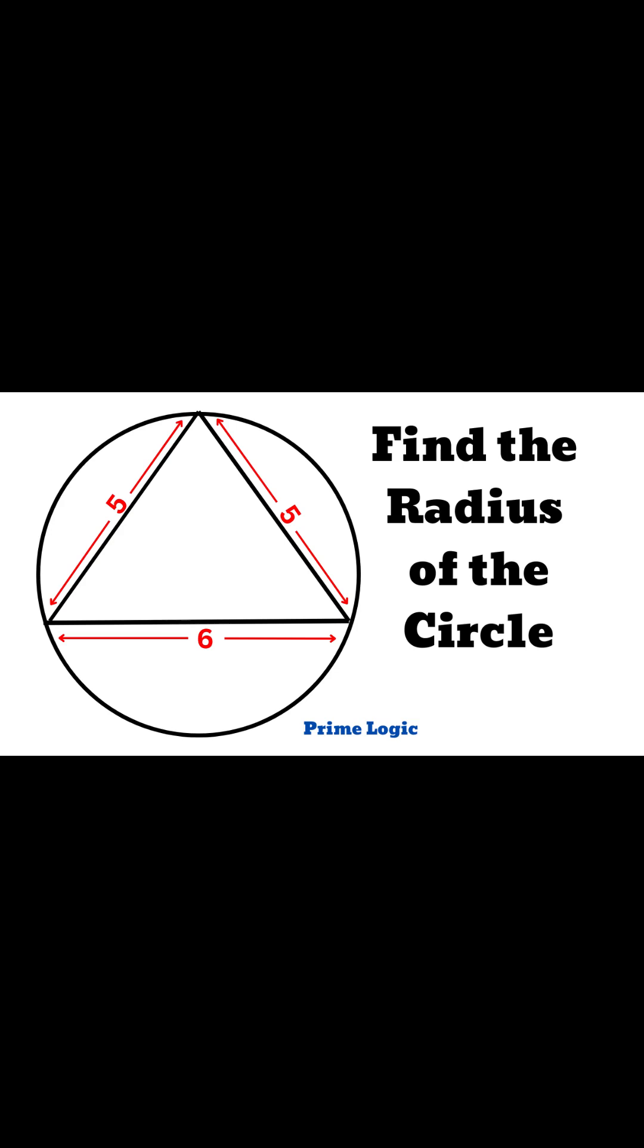I think most people miss the clever trick which is hiding in plain sight. This triangle has sides 5, 5, and 6, and it is inside a circle. So using geometry alone, can you figure out the radius of this circle?